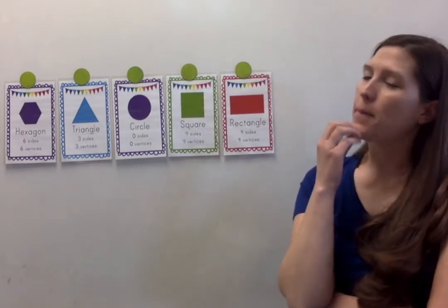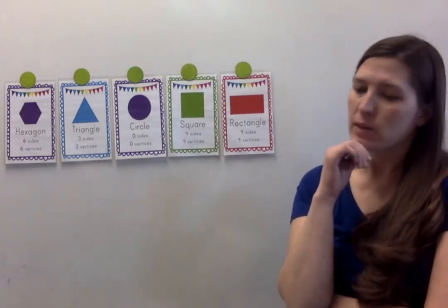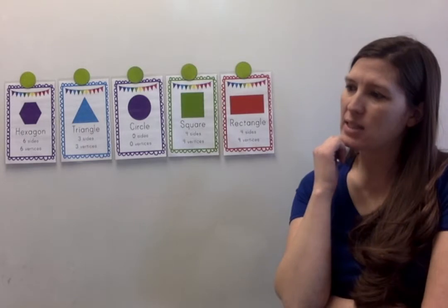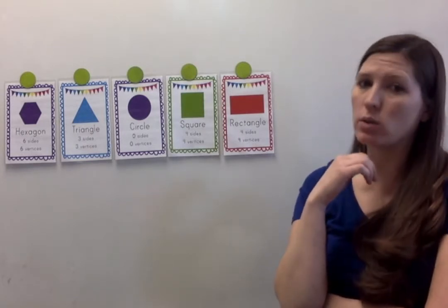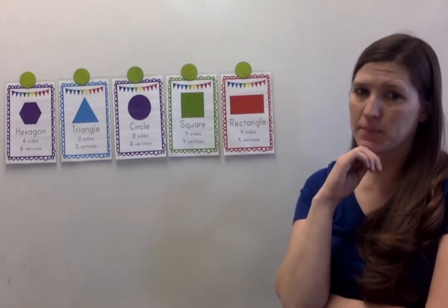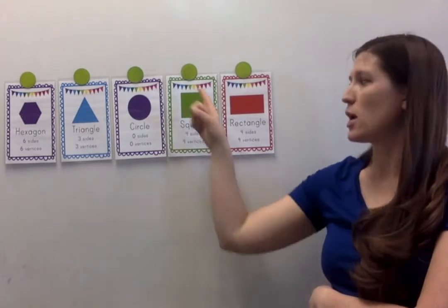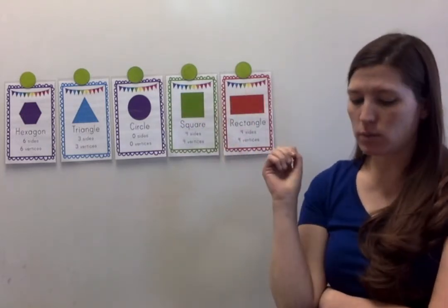All right, last one. I'm thinking of a shape that has four equal sides. Square. A square has four equal sides.